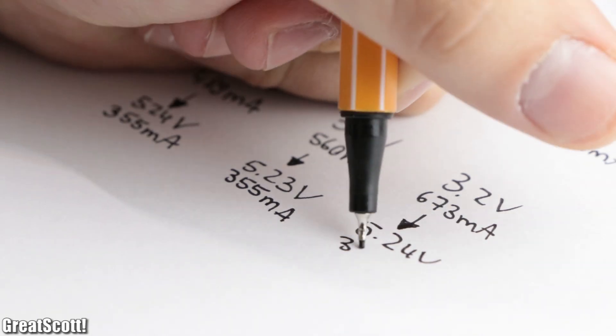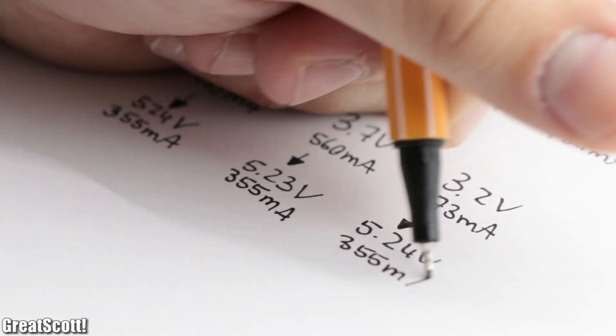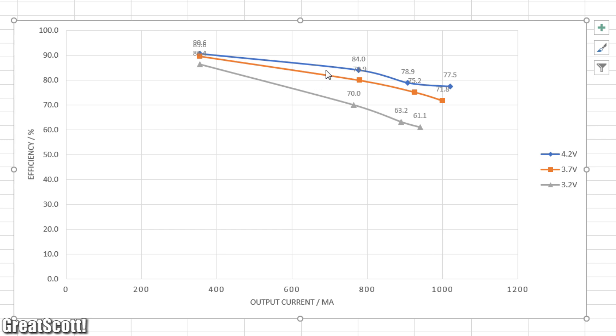As you can see in this diagram, the average efficiency is around 80%, but a lower input voltage and a higher output current demand can decrease this value a bit.